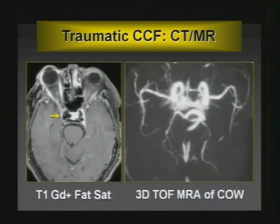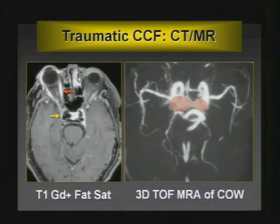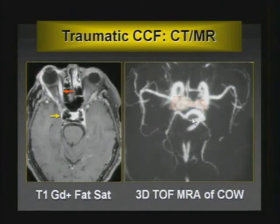On MR, asymmetric flow voids are visible, along with swollen extraocular muscles and proptosis. A 3D time-of-flight MRA of the circle of Willis shows a bow-tie flow-related enhancement outlining the cavernous sinus that shouldn't be there.